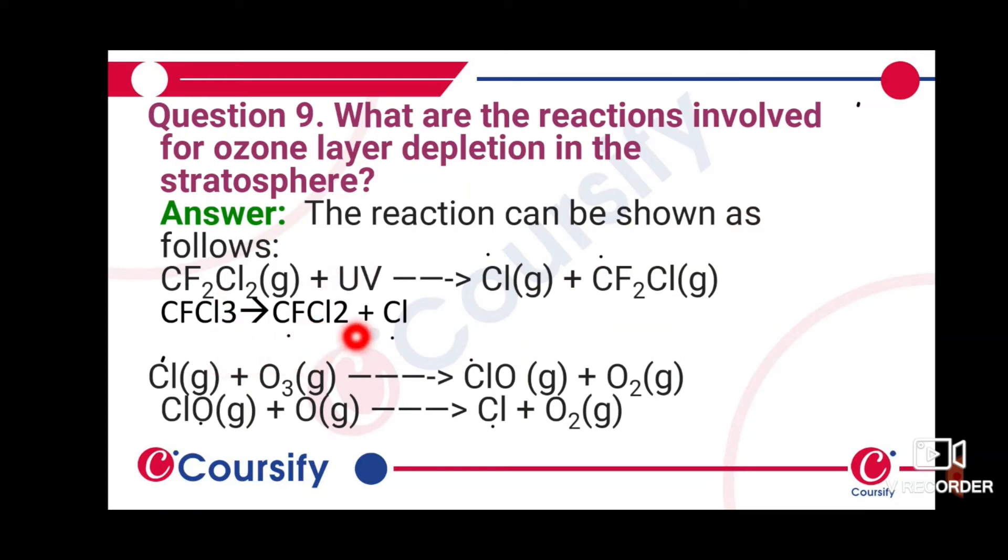CF₂Cl₂ and then you use Cl, both in free radical form. This is chlorine free radical and free ozone. So we use ClO and UV.